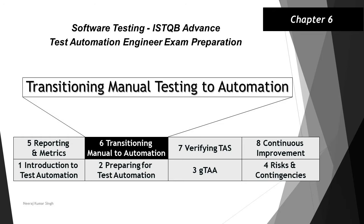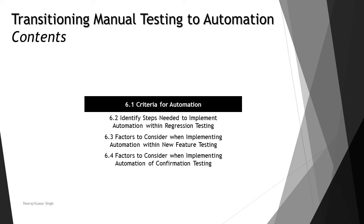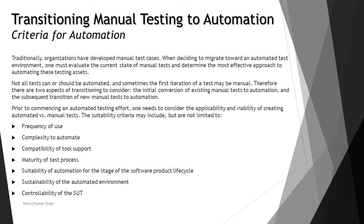Hello friends and greetings for the day. Welcome back to another tutorial on ISTQB Advanced Test Automation Engineer. We are in chapter 6 now, covering topics about transitioning from manual testing to automation testing. It's a very important aspect to understand how a manual testing organization can adopt automation tests and tools, and what needs to be considered before switching to automation. The very first topic is criteria for automation.